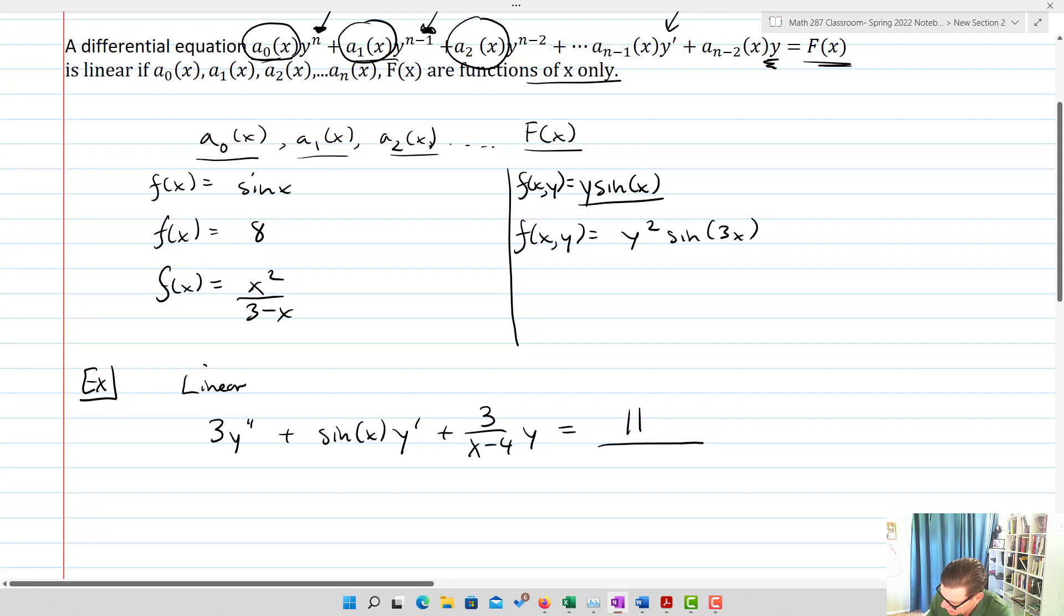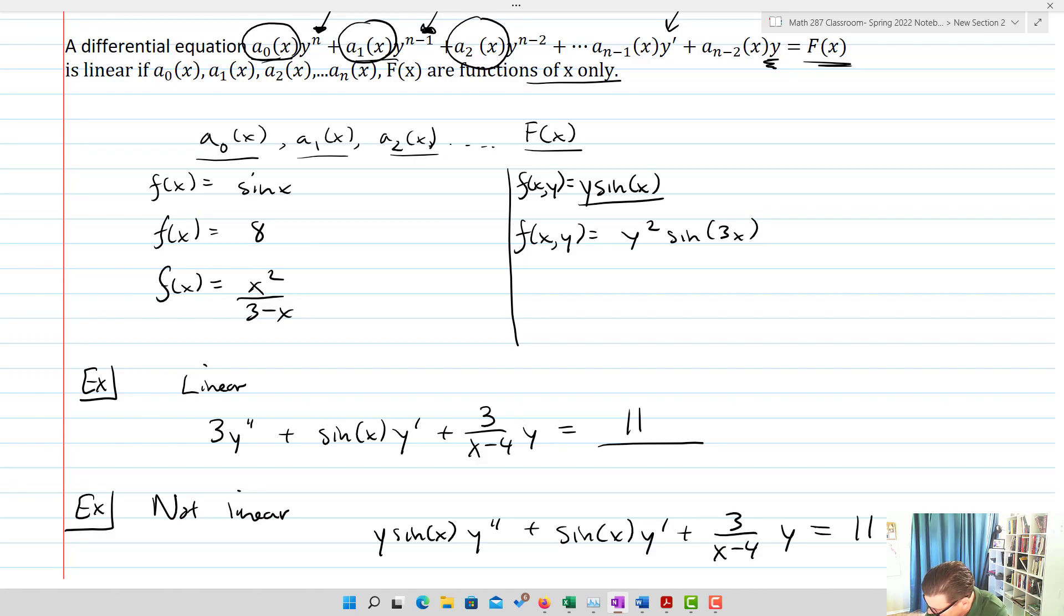Different example, we want to do not linear: we have something along the lines of y*sin(x)y'' + sin(x)y' + (3/(x-4))y = 11. We've got the same problem here - it's nonlinear, and that's because the function in front of y double prime, in this case, that's a function of y and x, and so hence that's nonlinear.